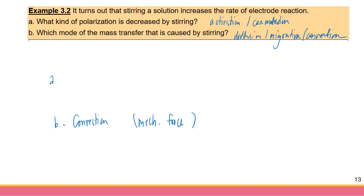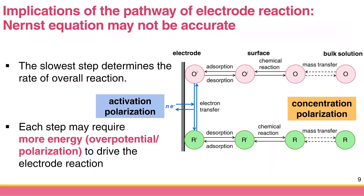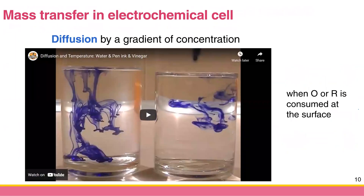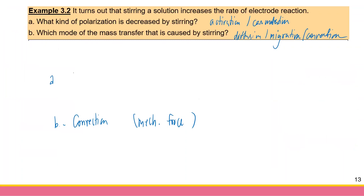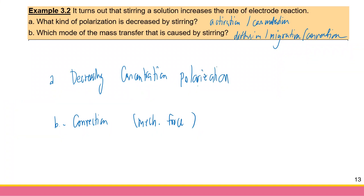For part A, we go back to our diagram. Activation polarization relates to decreasing the rate of electron transfer itself. But if we increase the rate of mass transfer, we are decreasing concentration polarization. So by stirring, we are decreasing concentration polarization. Sometimes people use the term 'diffusion polarization,' but since it's not always diffusion, we use concentration polarization.